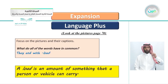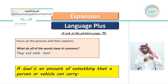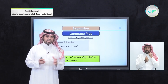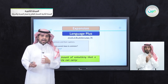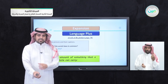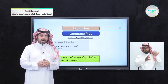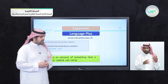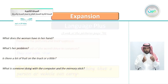A load is an amount of something that a person or a vehicle can carry. When you carry an arm load, it means what your arms can carry — this is an arm load. The truck load is how much the truck can carry. So again, a load is an amount of something that a person or a vehicle can carry.